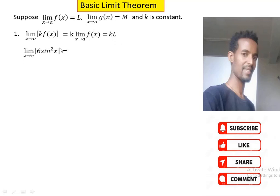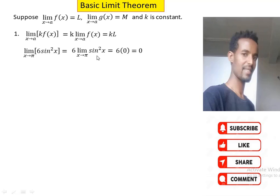For instance, the limit of 6 times sin²(x) as x approaches π is the same as 6 times the limit of sin²(x) as x approaches π, which equals 6 times [sin(π)]². Using direct calculation, sin(π) is 0, so we have 6 times 0 squared, which equals 0.